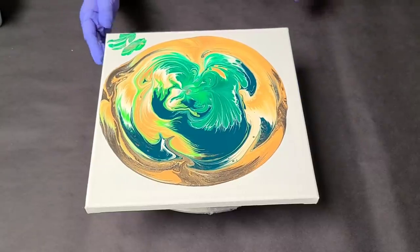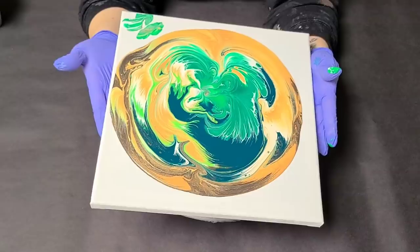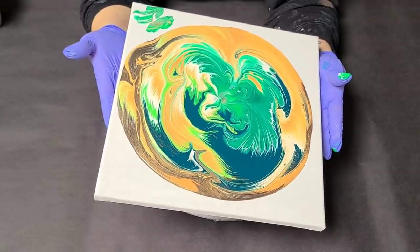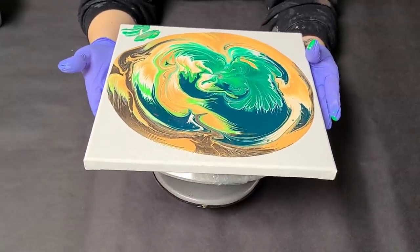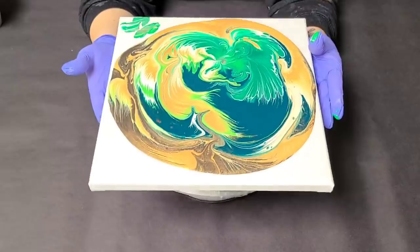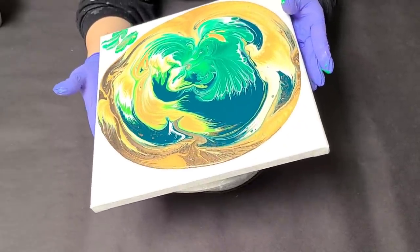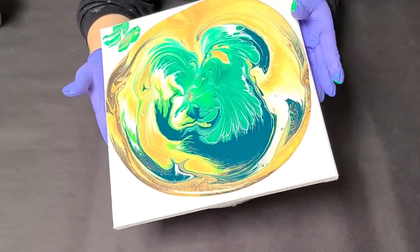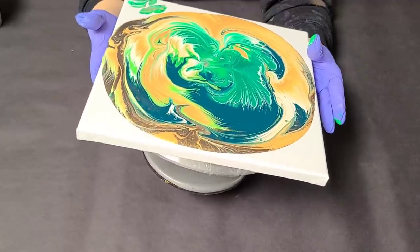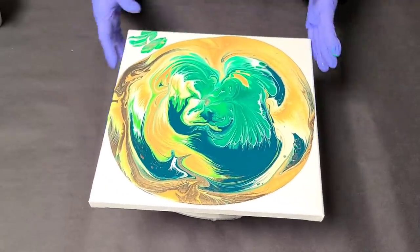And now we spin. Before I spin I'm going to tilt just a slight bit this way. If it's too much off-center the paint kind of all just flies off in one direction. So I'm just going to help it out just a little bit. All right I think that should be good.